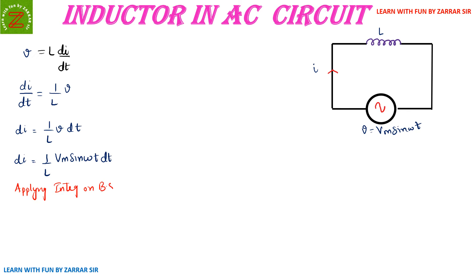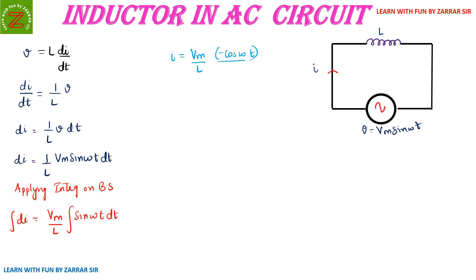Applying integration on both sides: integration of di will be (Vm/L) × integration of sin(ωt) dt. Integration of di gives i = (Vm/L) × integration of sin(ωt). The integration of sin(ωt) is −cos(ωt)/ω, therefore i = −(Vm / ωL) cos(ωt).